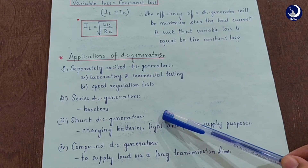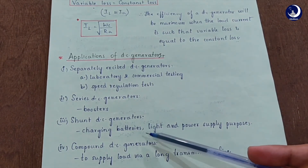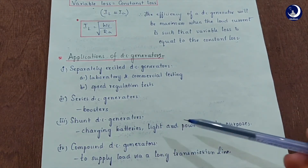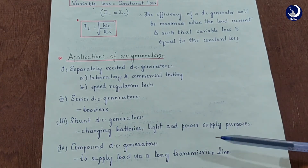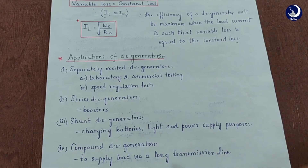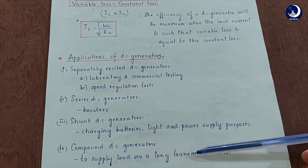The shunt DC generator essentially maintains a constant terminal voltage, so it is used for charging batteries. Shunt generators with field regulators are generally used for light and power supply purposes. The over-compounded DC generator is used where the generator is required to supply load via a long transmission line, because over-compounding compensates for the voltage drop in the line, maintaining constant voltage at the consumer's terminals.